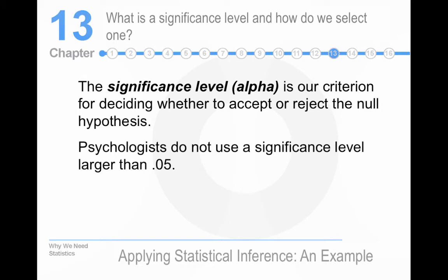The significance level, or alpha, is the criterion for deciding whether to accept. We never accept the null hypothesis. We either reject it or we fail to reject it. So, I have to disagree with that.